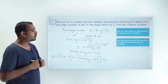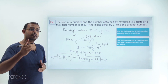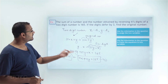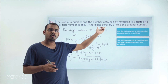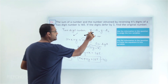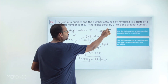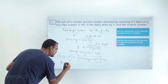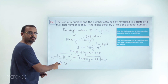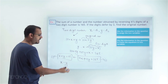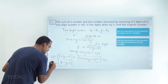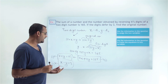There is one more piece of information given in the question. The digits of the original number differ by the value of 3. So the difference between digit 1 and digit 2 is 3. Since we assumed the first digit to be x and the second digit to be y, I can write x minus y equals 3. This gives me the second equation.